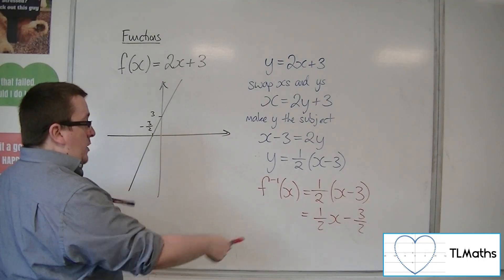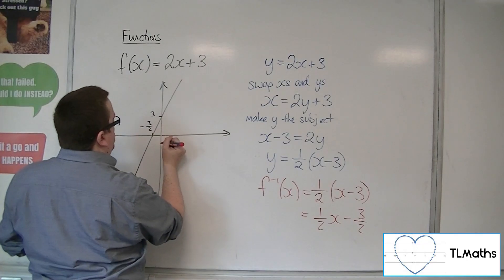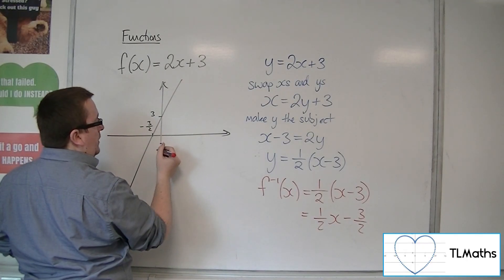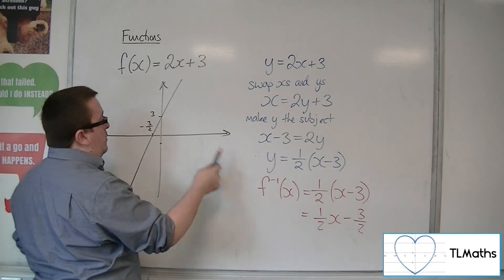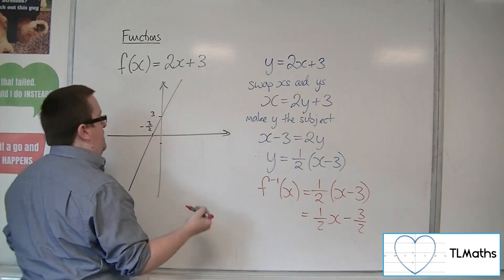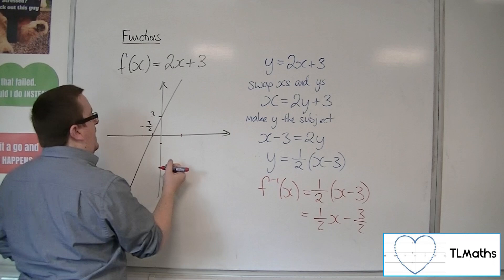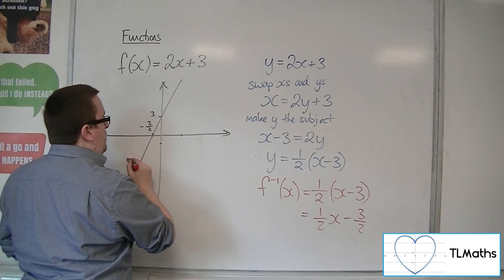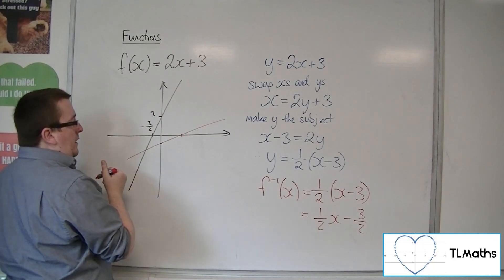Now, the y equals half x minus 3 halves. There's your minus 3 halves. And then, where is it going to go through the x-axis? Well, that would be when x is 3. So it would go through 3 on the x-axis. So you would get a line that looks like this.